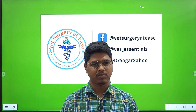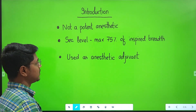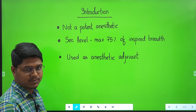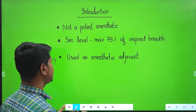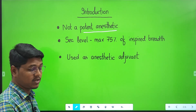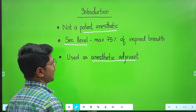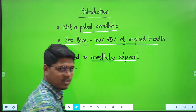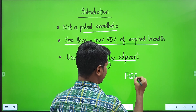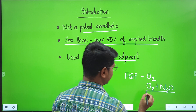We have studied the volatile anesthetics in the previous class. Coming to the introduction of gaseous anesthetics, especially nitrous oxide, which is commonly used — nitrous oxide is not a potent anesthetic. It is not used for induction or maintenance of anesthesia. It is usually used as an anesthetic adjuvant. The fresh gas flow can be purely oxygen, or it can be a combination of oxygen and nitrous oxide.